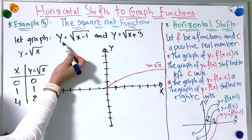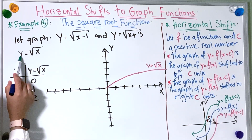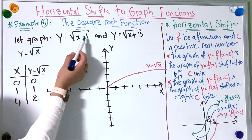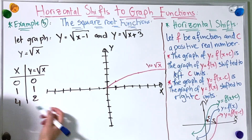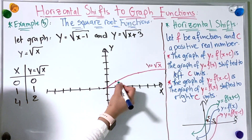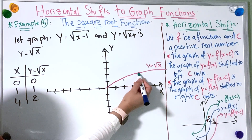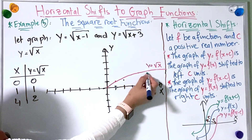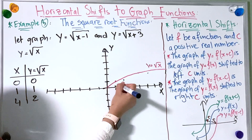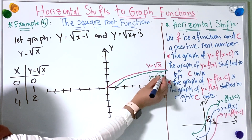Now we're going to graph y = √(x − 1) by using the graph of y = √x and shifting it to the right c units, which is 1. Using the same points, I take the first point at 0 and move it right 1 unit, then the second at 1 and move it, then the last at 4 and move it. Now I'm going to connect the points. And I found y = √(x − 1).